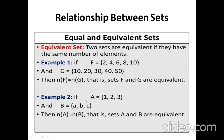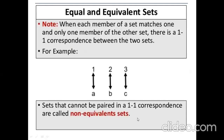As another example, if A = {1, 2, 3} and B = {A, B, C}, the number of elements in set A equals the number of elements in B. When each member of a set matches one and only one member of the other set, there is a one-to-one correspondence between two sets. When our sets are equivalent, there must exist a one-to-one correspondence. When one-to-one correspondence exists between two sets, we say the sets are equivalent.